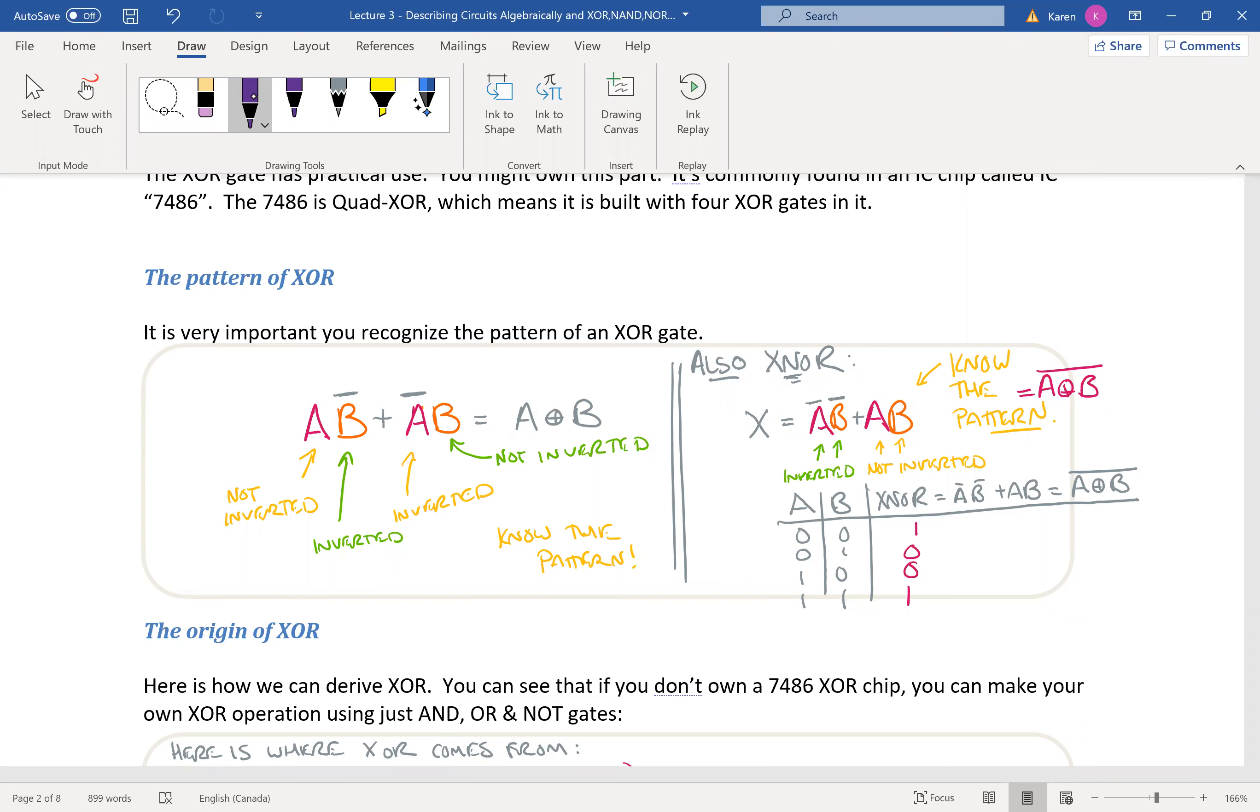Let's just say that instead of A, you have a huge expression in brackets that, if it's not inverted here and it is inverted here, and then you have another expression that is inverted here and not inverted here, that's still the exclusive OR pattern. So I really need you to know this pattern.